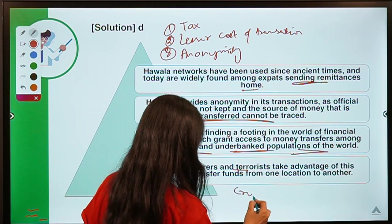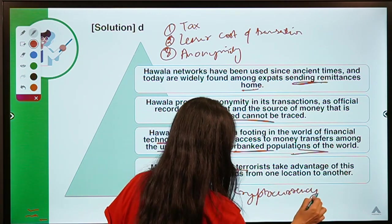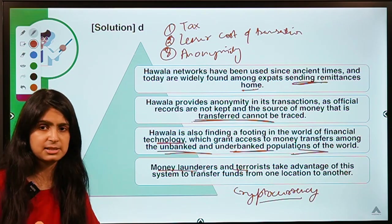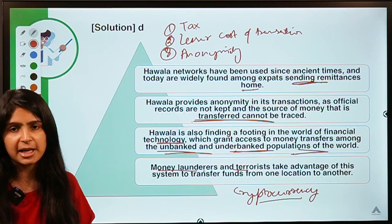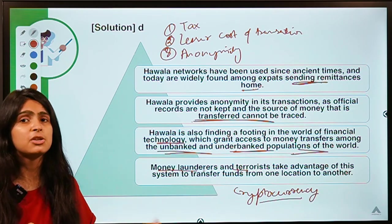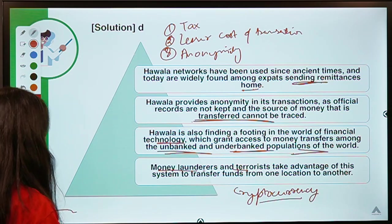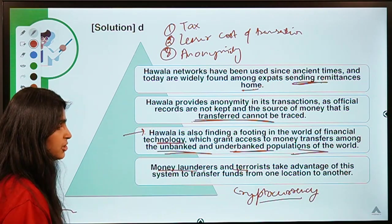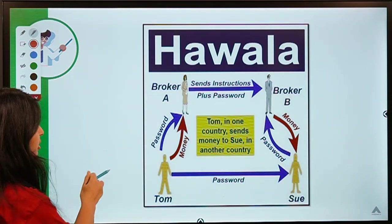On a related note, since we are talking about Hawala, many people accuse cryptocurrency of similar things — it also provides anonymity and lower cost of transaction, and it is a decentralized system. Many people accuse cryptocurrency of being used by anti-social elements or terrorists to transfer funds. You can connect this because Hawala is finding its way into financial technology, so cryptocurrency could potentially serve as a medium for such transfers.